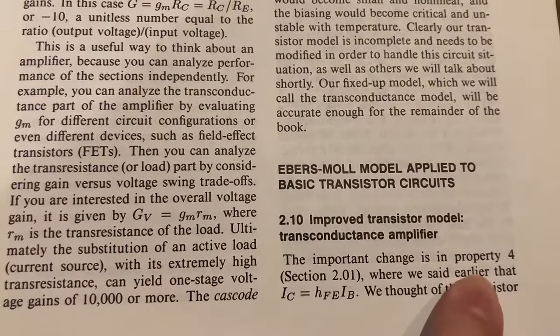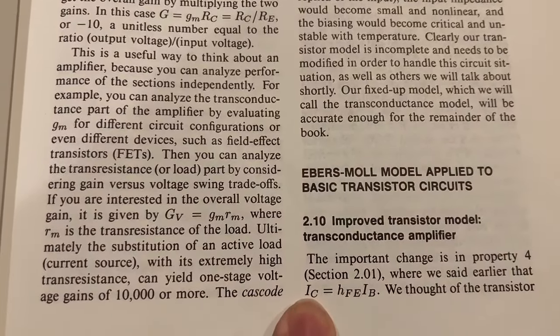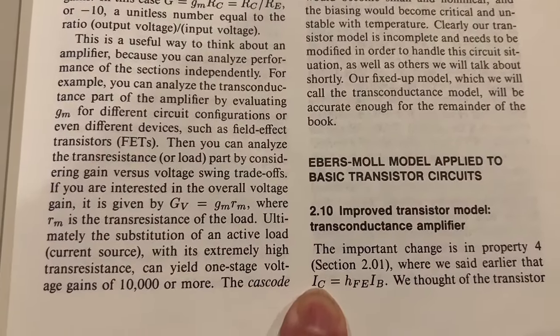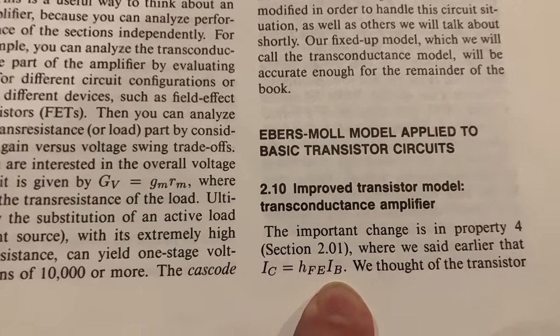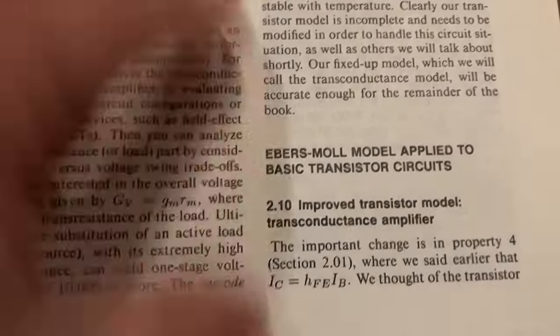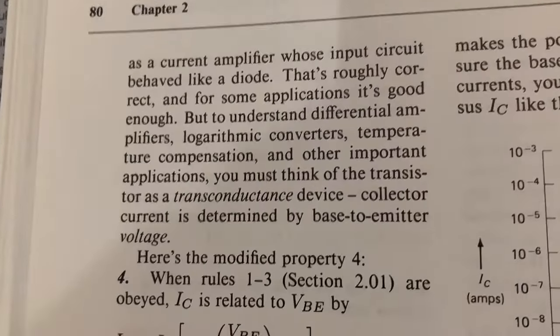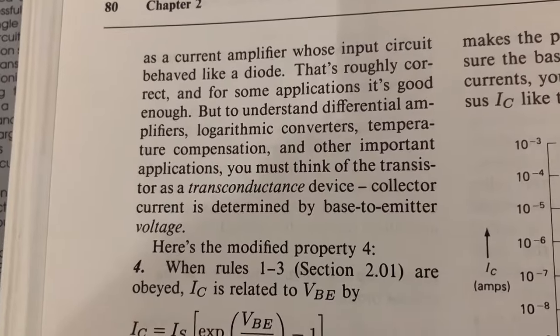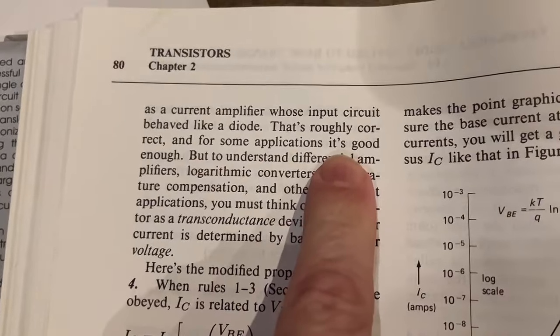The important change is in property 4, where we said earlier that IC, the current through the collector of the bipolar junction transistor, is equal to HFE times IB, the current through the base. HFE is what's generally called beta. We thought of the transistor as a current amplifier whose input current behaved like a diode. That's roughly correct, and for some applications, it's good enough.